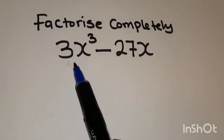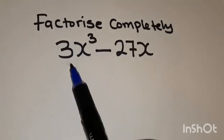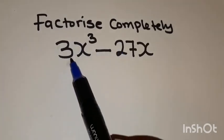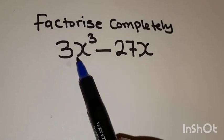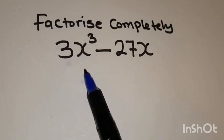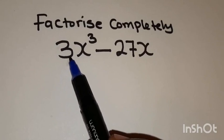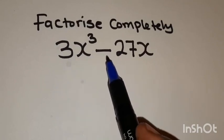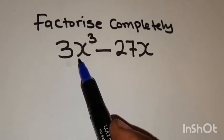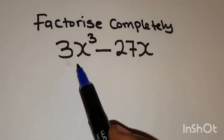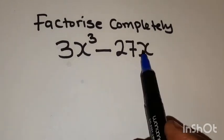So what you do to factorize completely, first of all, look at what is common between the two terms. 3 can go into 27. So 3 is one of the highest common factors, and also an x.